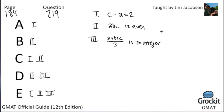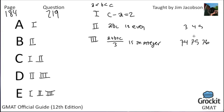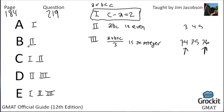Statement 1: By definition of consecutive integers, C is always two more than A, so C − A = 2 must be true. This eliminates answer choices B and D, which don't include statement 1.